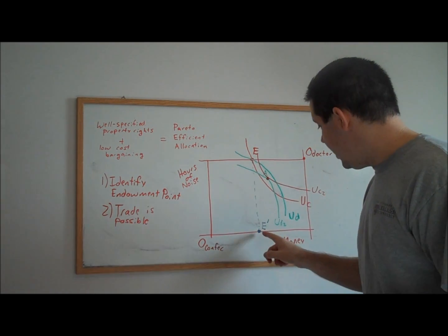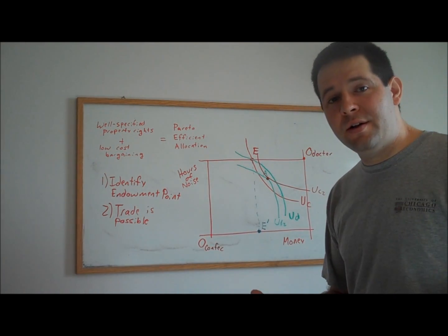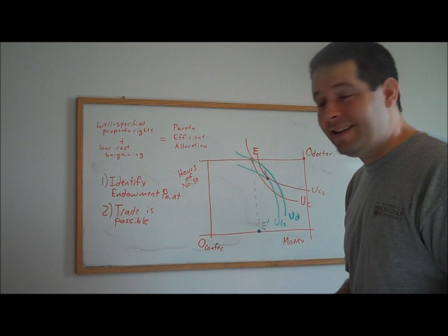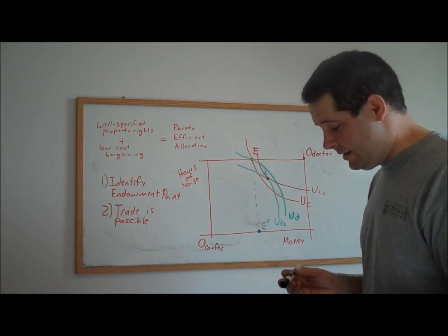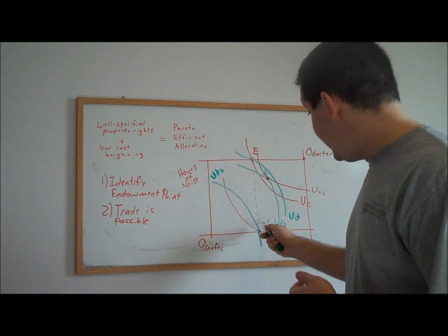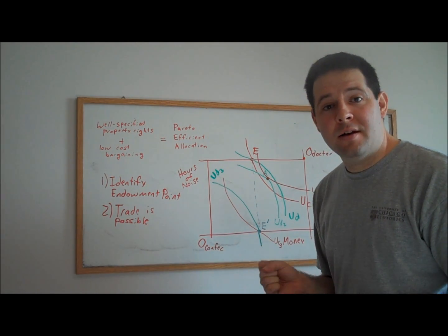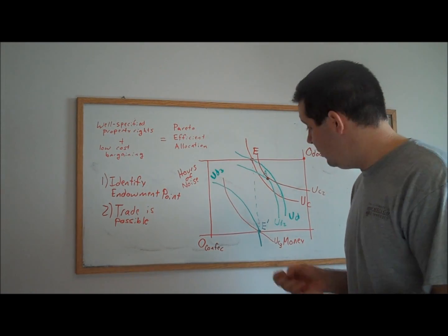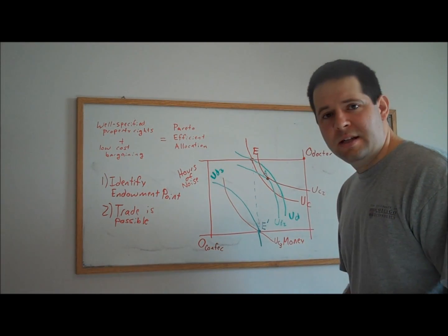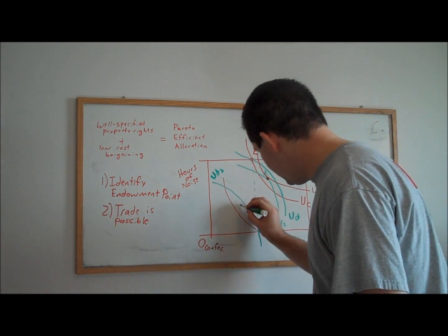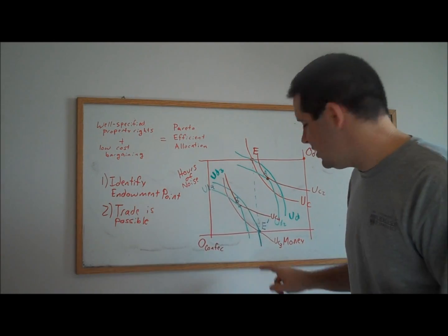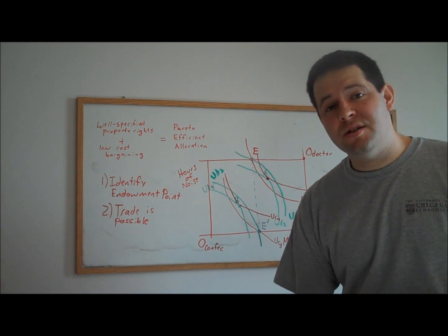Instead of bundle E, now we have bundle E prime as our endowment. And this is the alternative property right scheme where the doctor has the property right to have some silence. We can think about this in exactly the same way. Confectioner has an indifference curve through that point. And the doctor has an indifference curve through that point. What we see is that this point is not necessarily Pareto-optimal. In fact, the way we've drawn it, it is Pareto-sub-optimal. There are gains possible, mutually beneficial trades that could occur, provided that transaction costs are low enough. Let's pick out one such point in this eye. For point B, because there is a mutual tangency between indifference curve from the confectioner and the indifference curve from the doctor at point B, that is also Pareto-optimal.